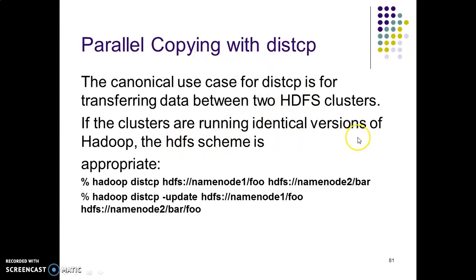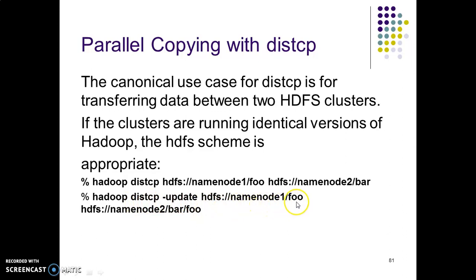If the clusters are running identical versions of Hadoop, we can use the Hadoop command with `distcp`, specifying the file name on namenode1 and namenode2 — namenode1 will be copied to namenode2 as `bar`. Similarly, we can update things using the `-update` option with distcp. The first command copies a file as-is, and the second command is for updating. Here the file name is `foo` and the second path is `bar`, so inside the `bar` folder we copy `foo`, or we update the contents inside `foo`.